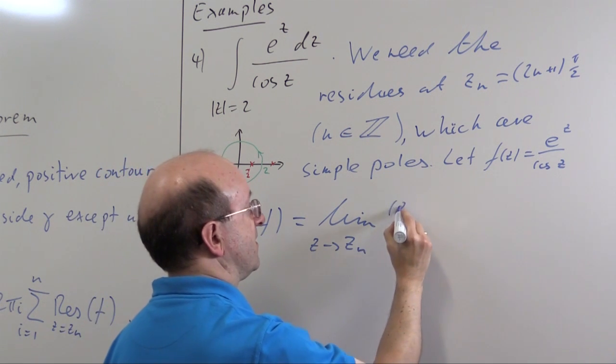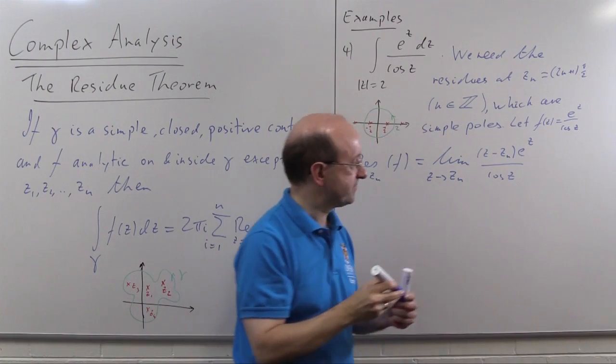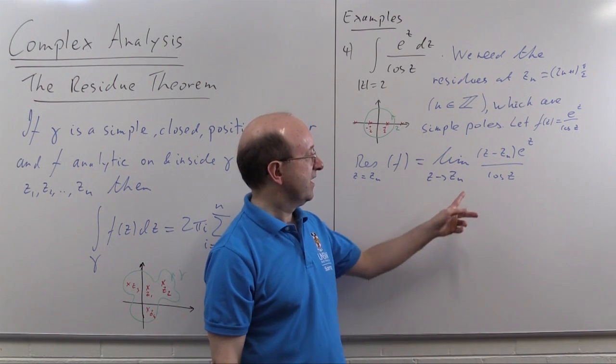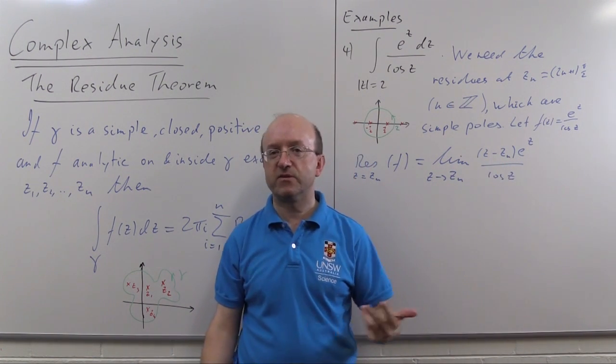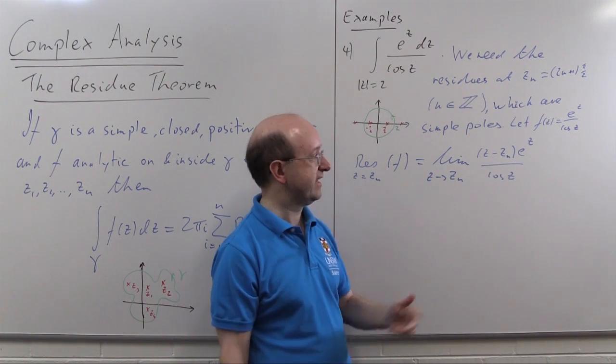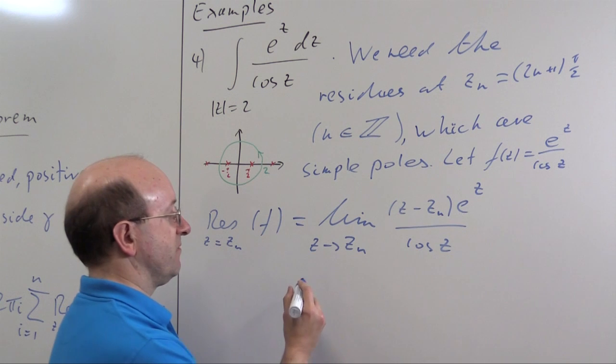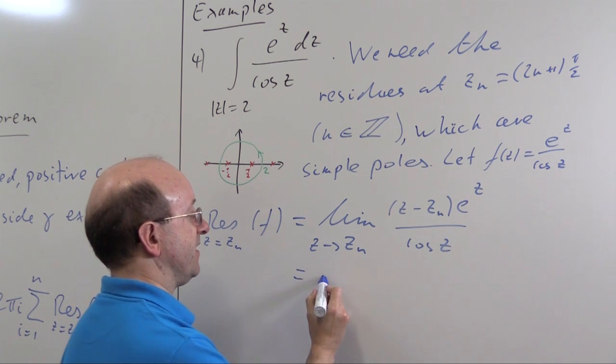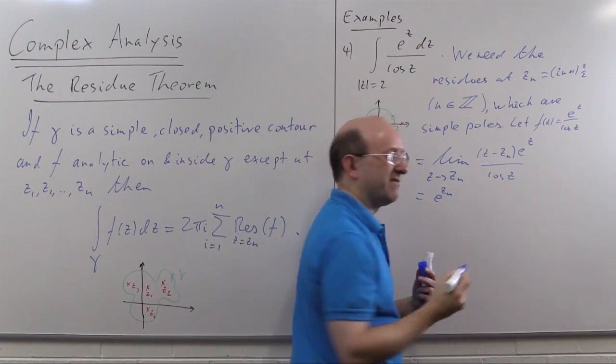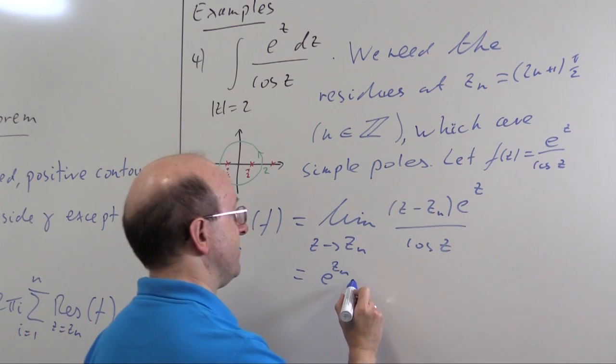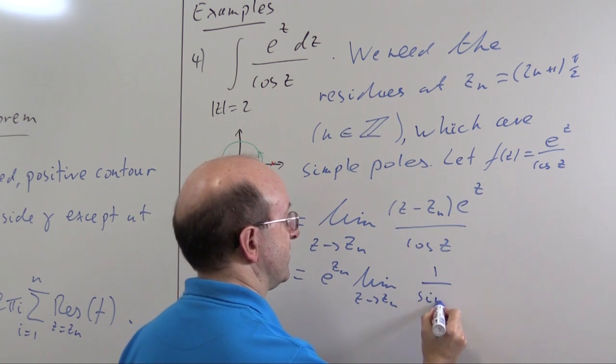So our formula says that the residue, well let's call this function F to save me having to keep writing it down. F(z) = e^z/cos(z). Then the residue at z = z_n of F by formula is the limit as z goes to z_n of (z - z_n)e^z/cos(z). That's the formula for the residue at a simple pole. Now we can calculate the limit of e^z part. That's easy enough because e^z is well behaved. We can just move that outside the limit and that's just e^(z_n). (z - z_n)/cos(z) we're going to have to use L'Hopital for. But it's a simple application of L'Hopital.